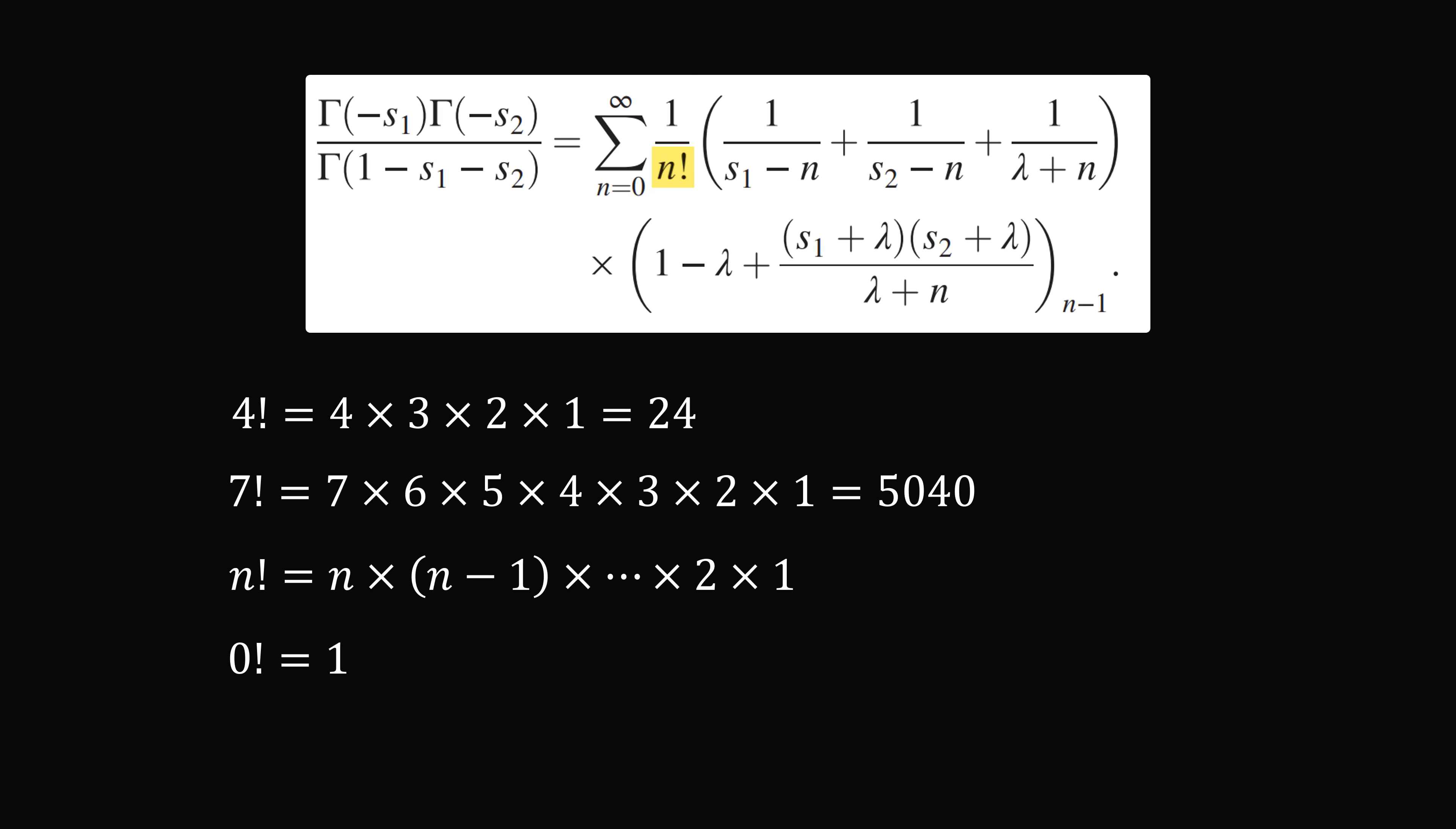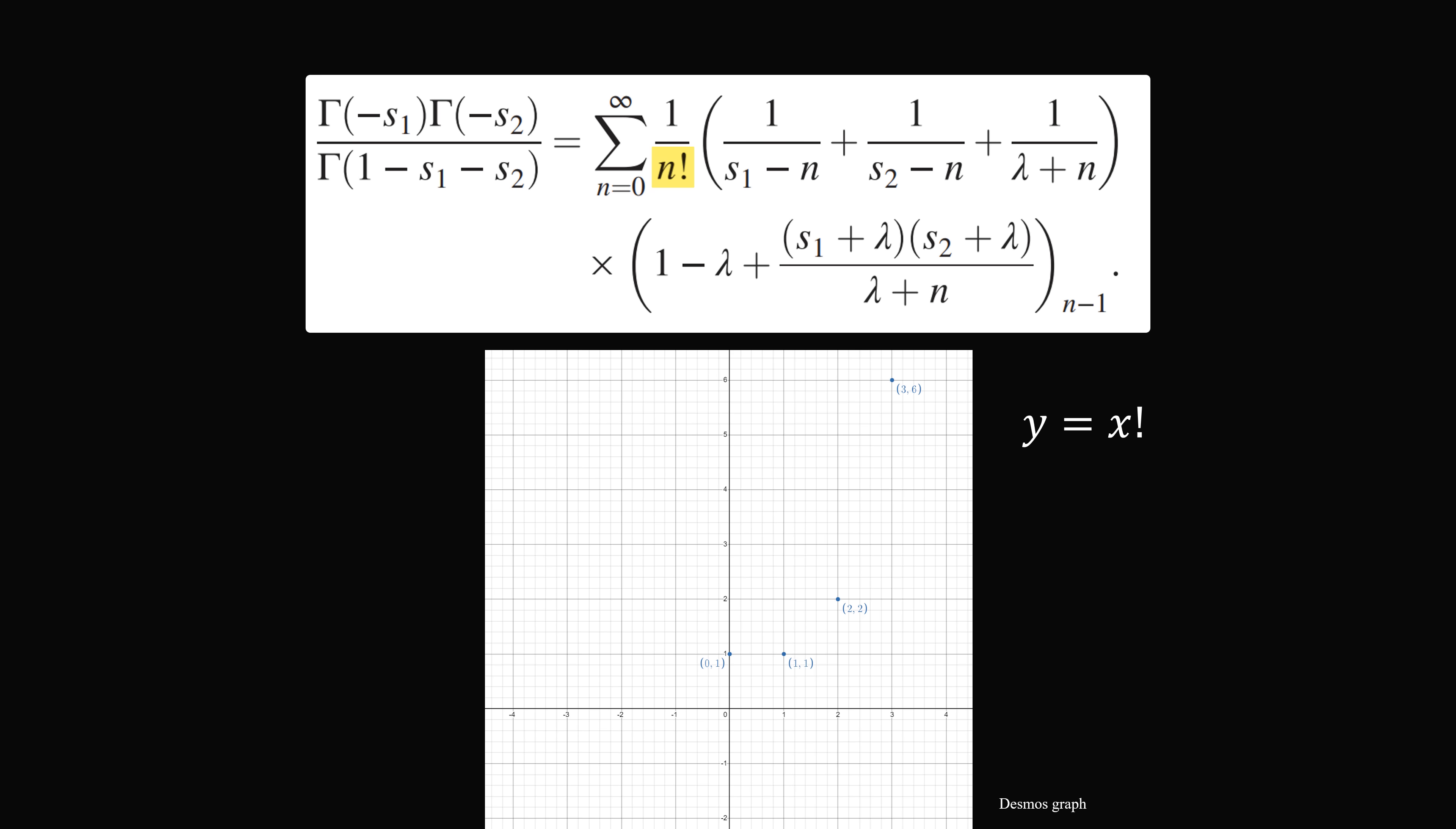So the factorial function is only defined on whole numbers. So if you were to make a graph y is equal to x factorial, it would just have certain points. You would have (0, 1), (1, 1),